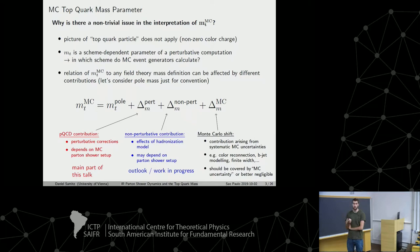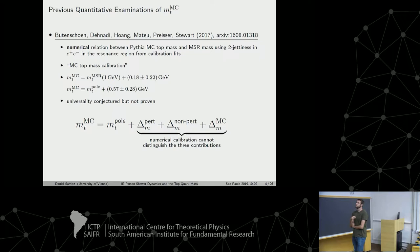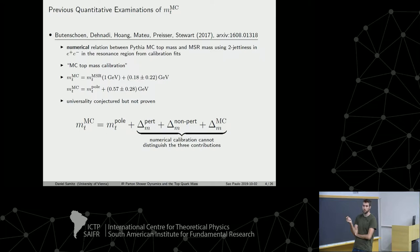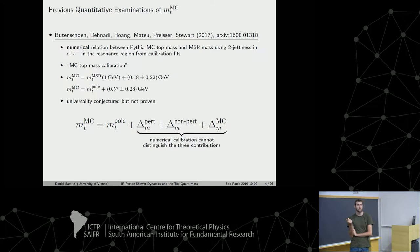Some previous work addressed this issue through a Monte Carlo top mass calibration. Using accurate predictions for the two-jettiness observable in e+e− collisions with full control over the mass scheme, they compared to runs with the PYTHIA event generator to find a numerical relation between the Monte Carlo mass parameter and a well-defined mass scheme. However, the universality of this procedure is conjectured but not proven, and these calibration studies give only a number — you cannot disentangle or understand the different contributions. Our project aims to conceptually understand these different contributions.